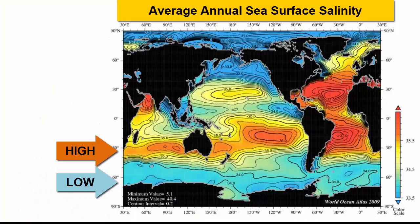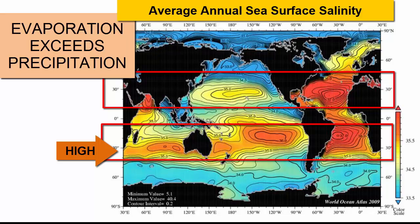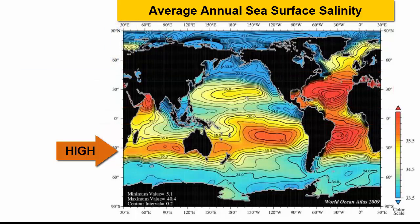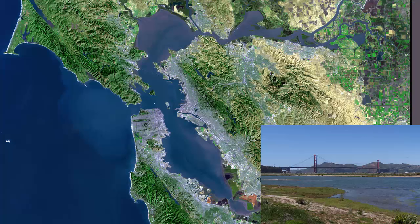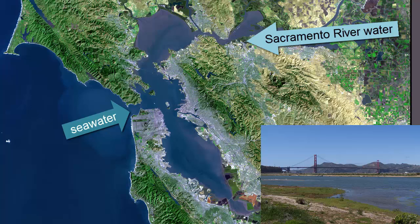Are all ocean waters everywhere in the world equally salty? They're pretty close. But where rates of evaporation are much higher than rates of rain, surface seawater can get up to 10% saltier. And where rain is high or where rivers enter the ocean, surface seawater can get much fresher. In estuaries like San Francisco Bay, freshwater mixes with seawater, and we can find all levels of saltiness from average seawater to totally fresh.